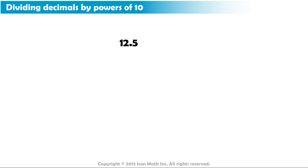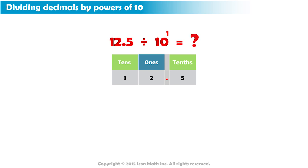For example, what is the result of dividing 12 and 5 tenths by 10 to the power 1? Let us look at the decimal number in a place value chart and carry out the division to observe what happens.